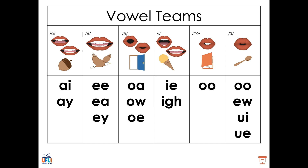Then we learned about long I. We can make the long I sound by using the letters IE or the letters IGH. Then we learned the vowel team U as in book. We learned that OO can say U, or it can say U like in our long vowel teams. Like OO, we also have EW, UI, and UE.